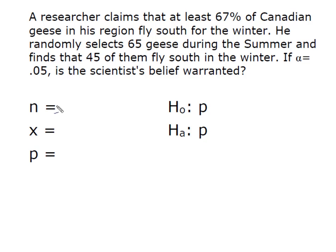We selected a sample size of 65, and out of those 65, 45 of them had the characteristic we wanted—they flew south for the winter. This is our value of x, and the presumed value of the population proportion is 67%.